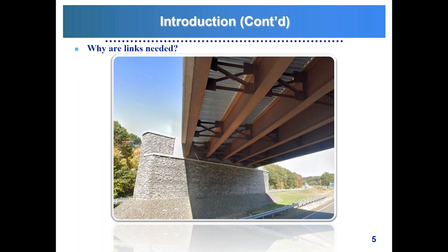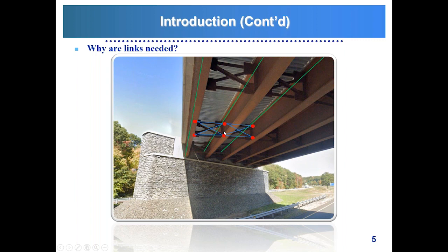Here we have a typical steel girder superstructure. In a Midas model, we'll have beam elements for the main girders and elements and nodes for the cross-frame members. These cross-frame member elements are at a different elevation from the girder nodes, so the software doesn't know that they are connected. In reality, we have a connection plate and a web connecting the cross-frame to the girder. That's why we have to tell the software that these are physically connected — and that's what we need links for.